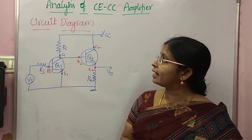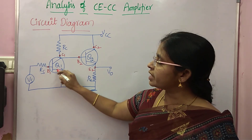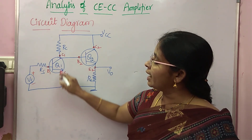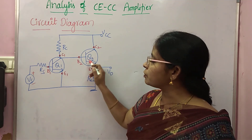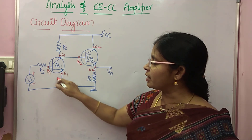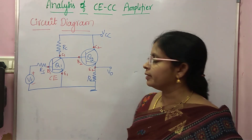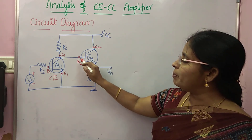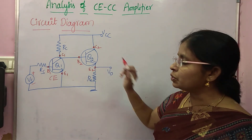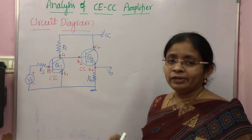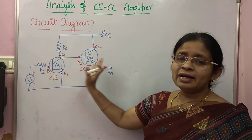Good evening, welcome to the video on analysis of the CECC amplifier. In the first stage, the base is input, emitter is grounded, and the output at collector is given as input to the base of the second transistor. This is CE configuration. In the second stage, base is input, collector is AC grounded, and emitter is the output terminal, hence Q2 is CC amplifier. So this is a CECC cascade amplifier, because the two stages are in series.